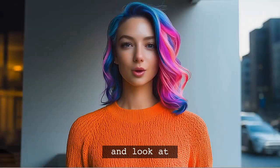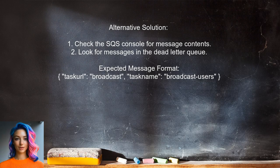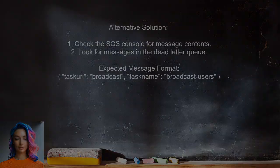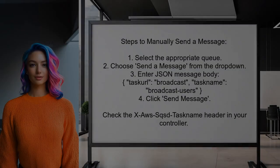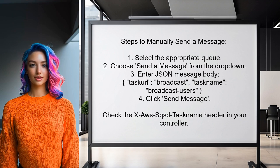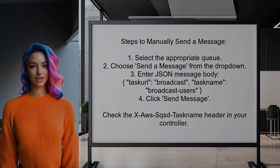Another approach is to check the SQS console to view message contents — the message may end up in the dead letter queue. The expected message format is a JSON object with the task URL and task name. You can also manually send a message through the SQS console: select the queue, choose send a message, enter the JSON message body, and click send message. In your controller, check the x-sqsd-taskname header to identify the invoked task.